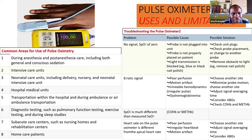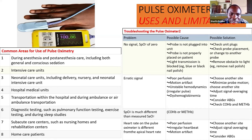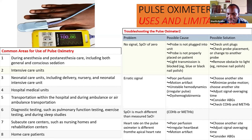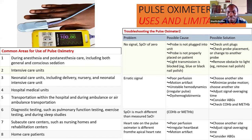These are the limitations of the pulse oximeter. You have to understand the errors that can result. For example, problem number one: no signal or SpO2 error — the probe may not be plugged into its unit or not properly placed on the patient. Most of these errors relate to the user and are the most common errors with medical equipment. You need to analyze the errors that can cause the pulse oximeter to produce wrong results.